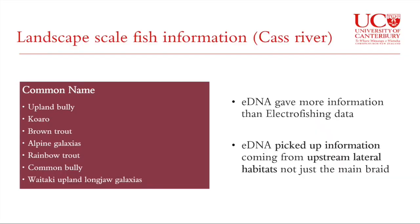One reason I chose the Cass is because Holly is also working there collecting fish data. All the fish data she collected over summer I was also able to detect with my eDNA filters. Interestingly, even if a fish was absent from the main braid, I was still able to detect it if it was present in one of the lateral habitats upstream. Three species — the alpine galaxias, the rainbow trout, and the waitaki upland longjaw galaxias — were all not sampled by Holly.